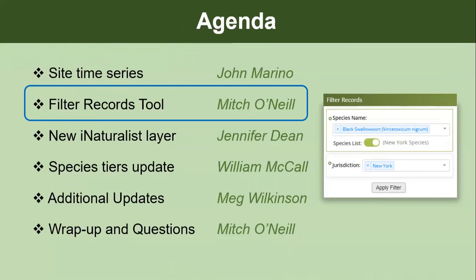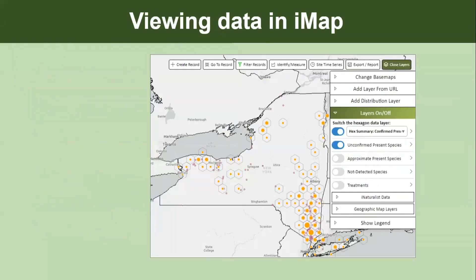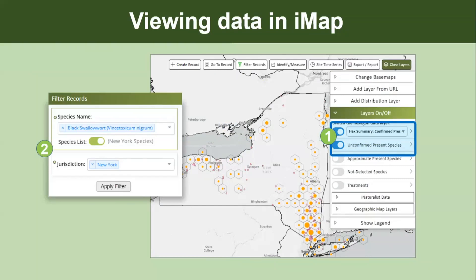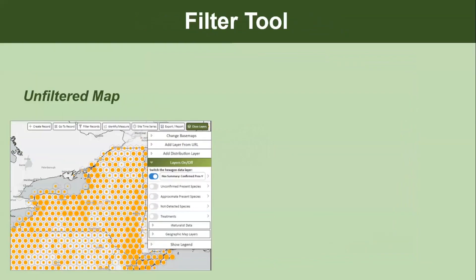That's it for the site time series. Feel free to put any questions in the chat. Now I'll start talking about the filter tool. The filter records tool is part of the two main things you need to do to view data in IMAP: which layers you have turned on and off — for presence, not detected, or treatment data — and then to filter what records you're seeing from those layers, you use the filter tool, for instance to filter on a species.